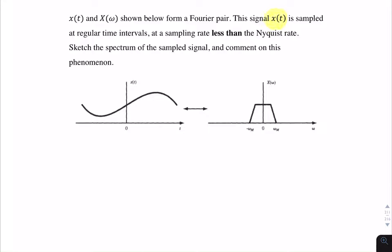In this question, we have a signal x of t, and it's sampled. It's sampled at a rate less than the Nyquist rate. So what we have here is undersampling.